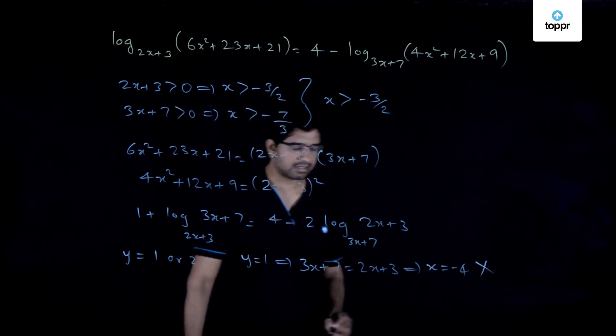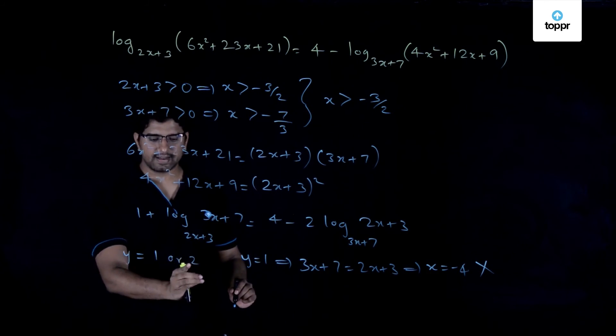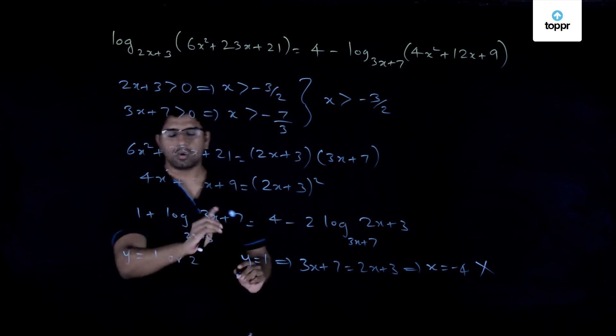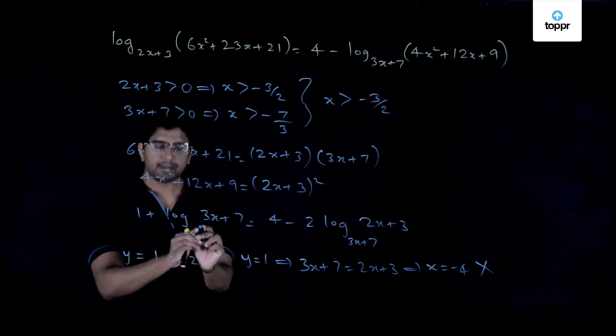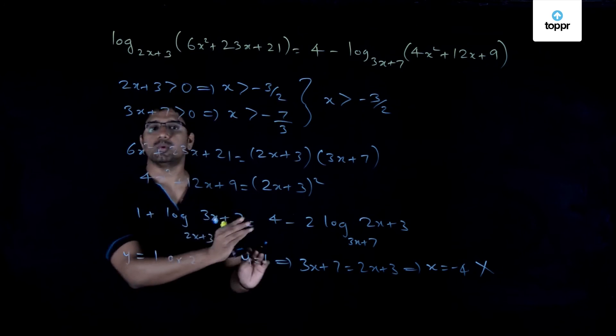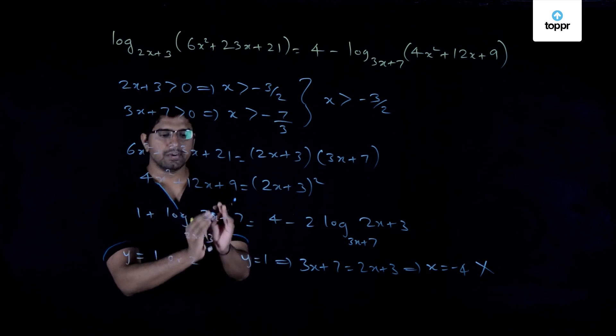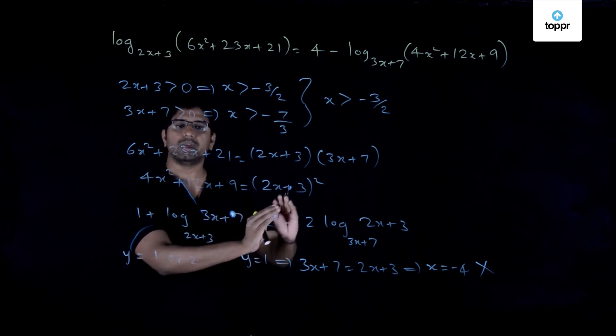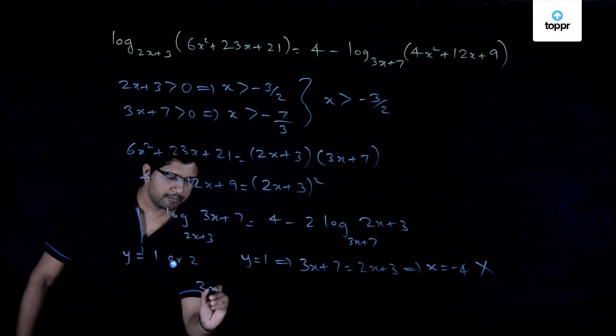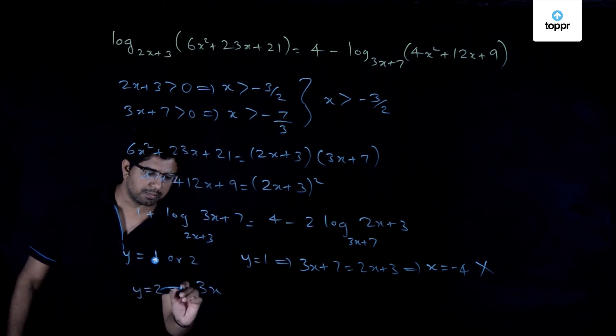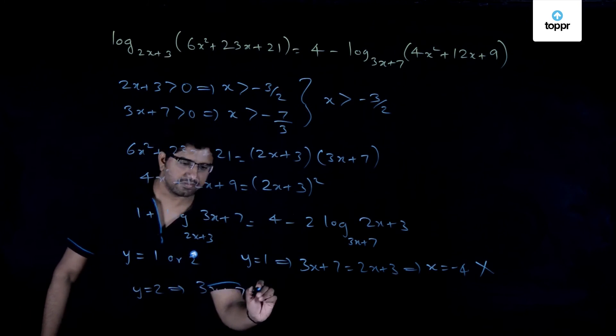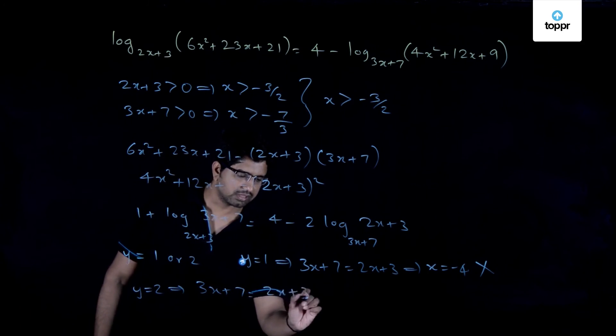And then go for the next value of y, that is y is equal to 2. So what that implies is that this expression is equal to 2, or in other words, 3x+7 is equal to (2x+3)². So this is y=2 implies 3x+7 equals (2x+3)².